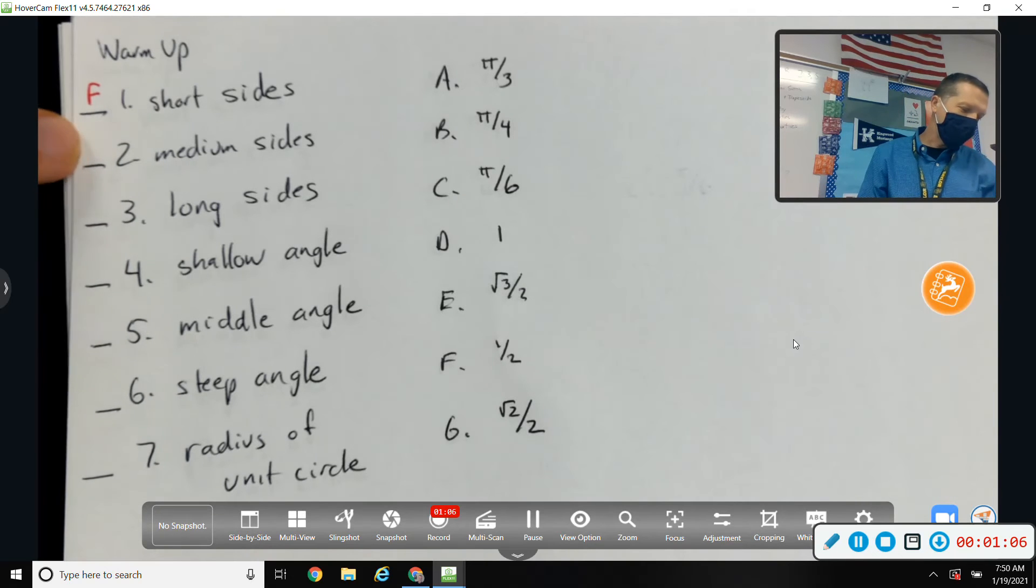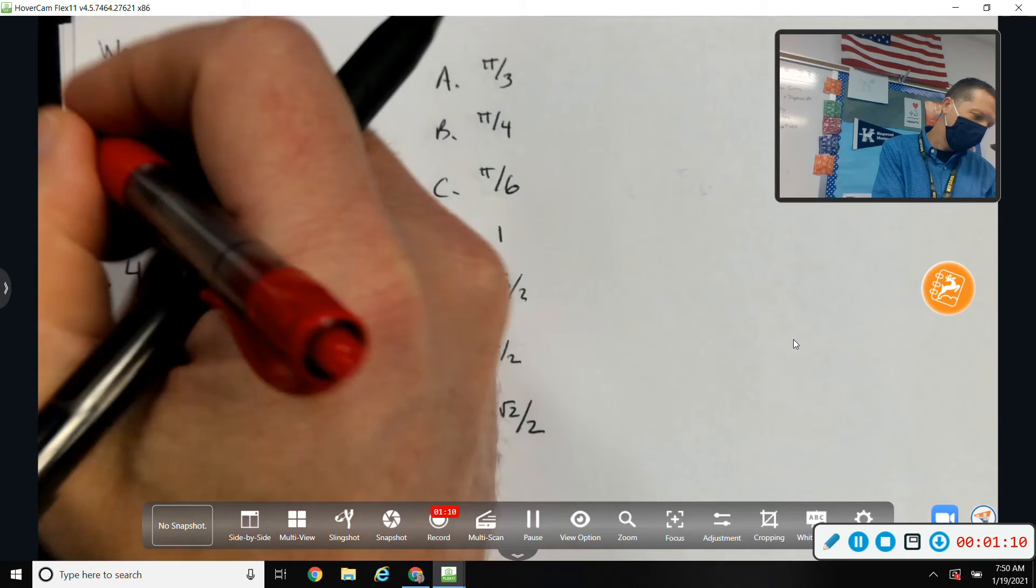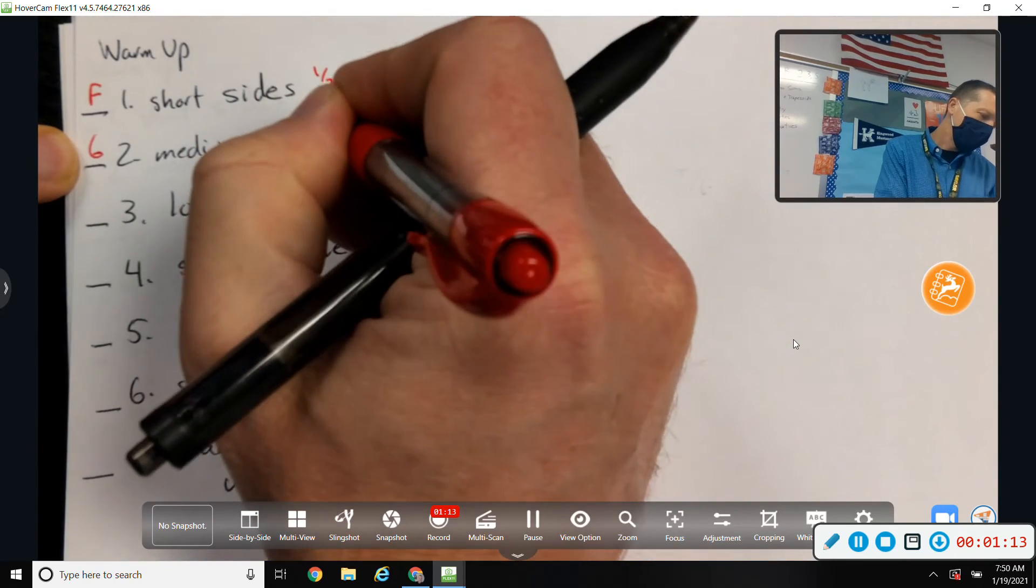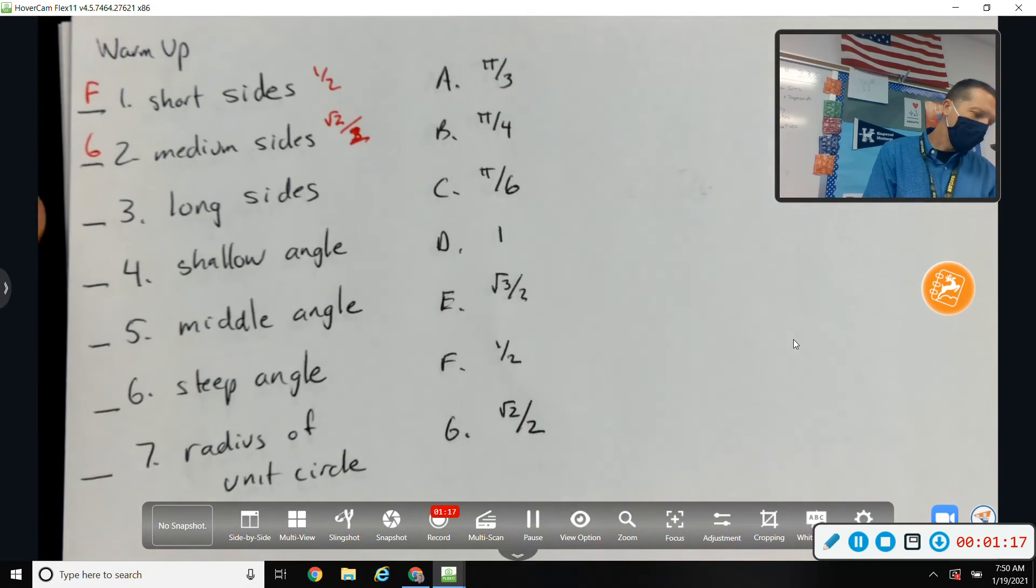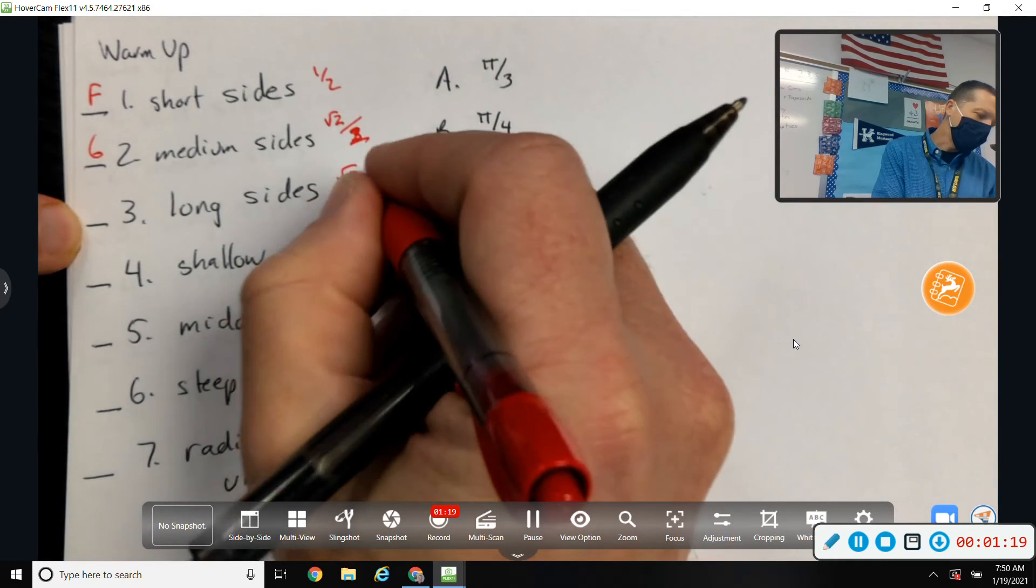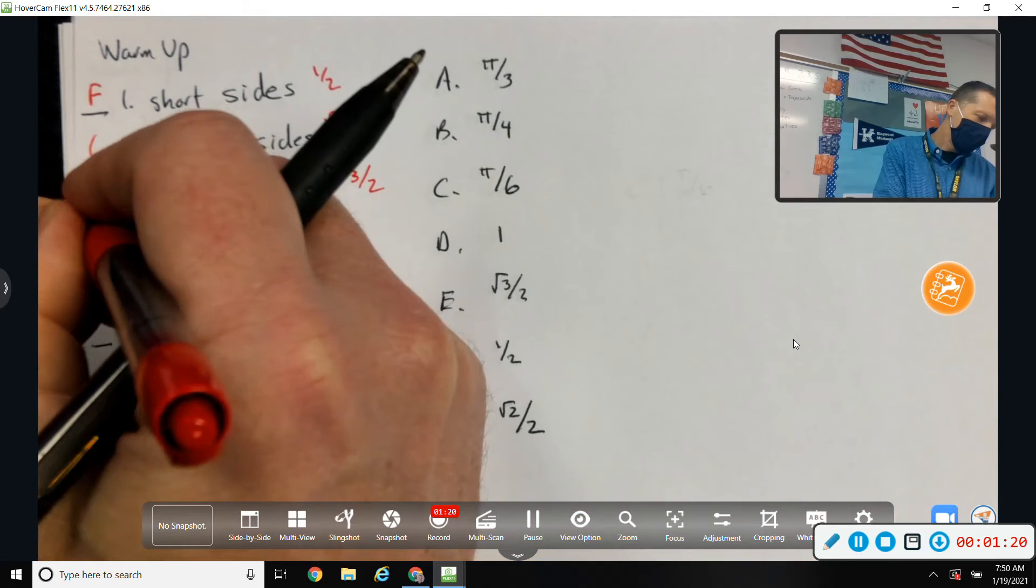How about the medium sides? Root 2 over 2. That would be G. And then the long sides, whoops, root 2 over 2. The long sides are root 3 over 2. So that's E.